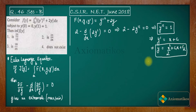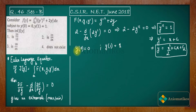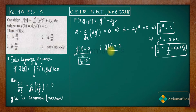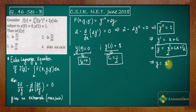Now apply the boundary conditions. Using y(0) = 0, we get c₂ = 0. Using y(1) = 1, placing the values in gives c₁ = 1/2. So the extremal function is y = x²/2 + x/2.